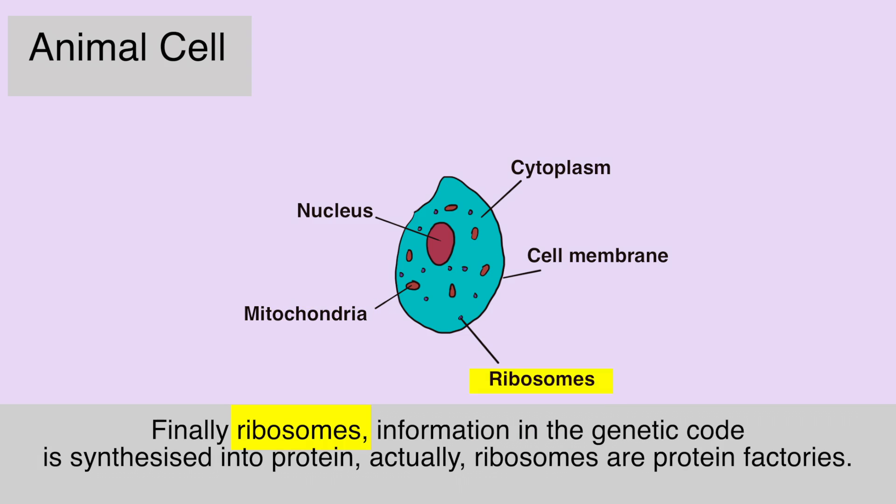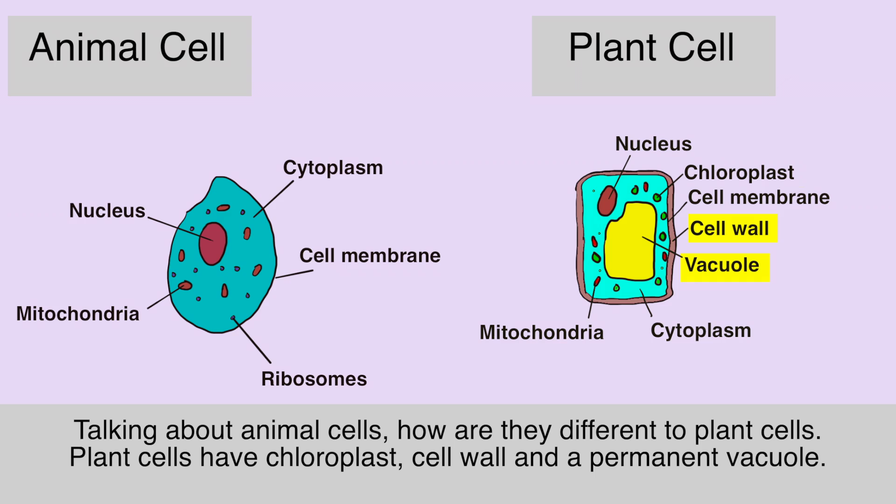Finally, ribosomes — info in the genetic code is synthesized into protein. Actually, ribosomes are protein factories.